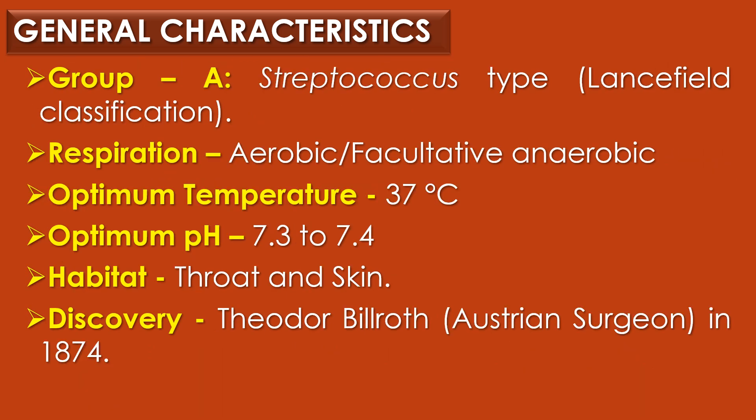In Lancefield classification, Streptococcus pyogenes comes under group A, so it is also called as group A Streptococcus. The mode of respiration is aerobic or facultative anaerobic. The optimum temperature required for cultivation is 37°C and the optimum pH is 7.3 to 7.4. Streptococcus pyogenes is widely present in the throat and skin of human beings. It was discovered by the Austrian surgeon Theodor Billroth in the year 1874.